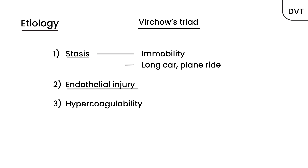The second cause is endothelial injury. That means there's some sort of injury or trauma, usually to the leg, that sets off a cascade that develops a blood clot. Specifically, it's the endothelium that's injured or damaged, and in repairing it the body sets off a cascade that develops blood clots, which unfortunately can cause a DVT.